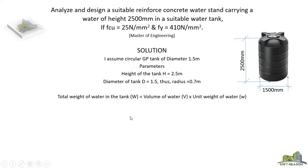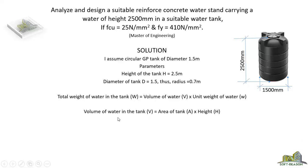What we are trying to calculate is the total pressure or weight of the tank, so we can use it to design the reinforced concrete stand elements — such as the beam, slab, and columns that will carry all the load. The total weight of water in the tank W equals volume V multiplied by the unit weight of water w, where w is the unit weight equal to the acceleration due to gravity.